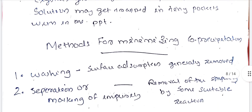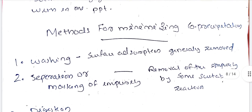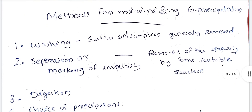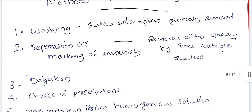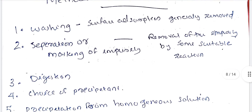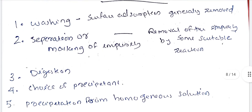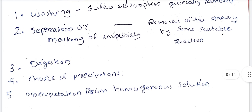Methods of minimizing co-precipitation: first, washing; second, separation or masking of the impurity; third, digestion; fourth, choice of precipitant; fifth, precipitation from homogeneous solutions. These methods help in controlling and minimizing contaminants in the precipitate.